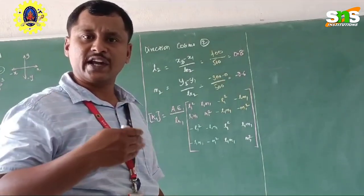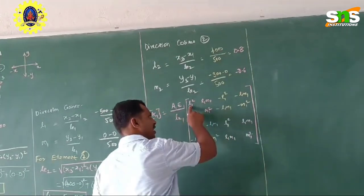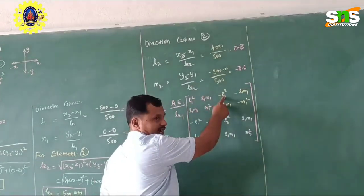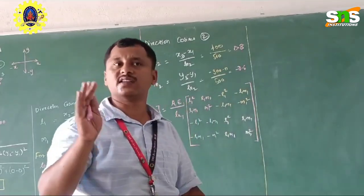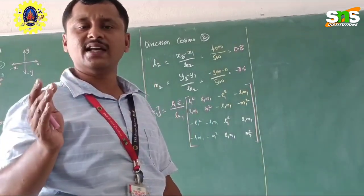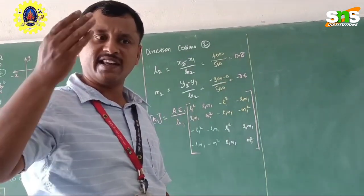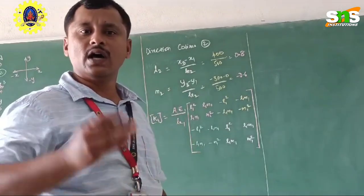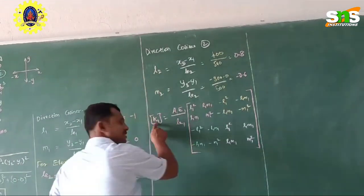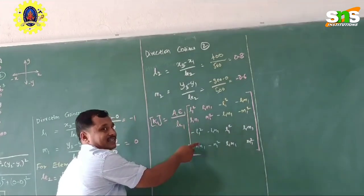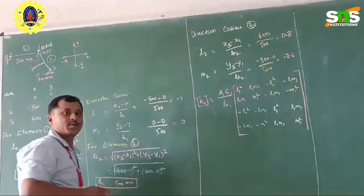If you look into the formula, the only difference is the sign variation — here it is positive sign, here it is negative sign, so the opposite things will be in the opposite sign. This is the simplest way to remember it. Once you write the formula you will be able to memorize it. This is the method to keep in mind while writing the formula for finding the stiffness matrix for a truss element.